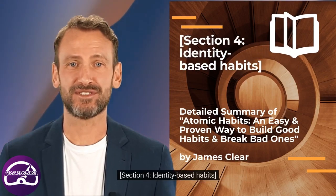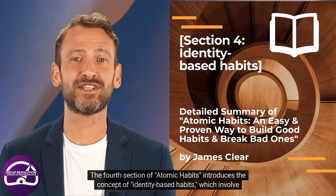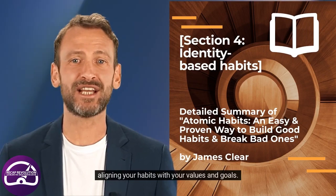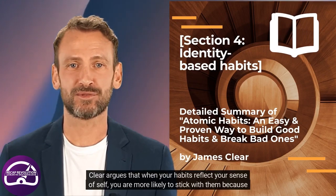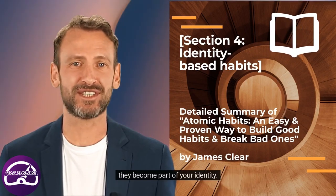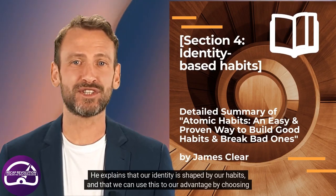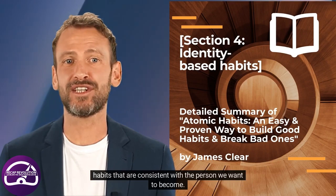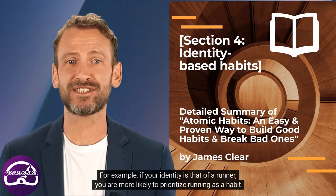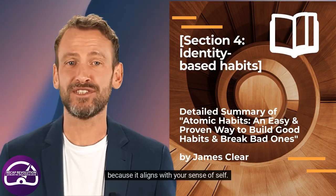The fourth section of Atomic Habits introduces the concept of identity-based habits, which involve aligning your habits with your values and goals. Clear argues that when your habits reflect your sense of self, you are more likely to stick with them because they become part of your identity. He explains that our identity is shaped by our habits, and that we can use this to our advantage by choosing habits that are consistent with the person we want to become. For example, if your identity is that of a runner, you are more likely to prioritize running as a habit.